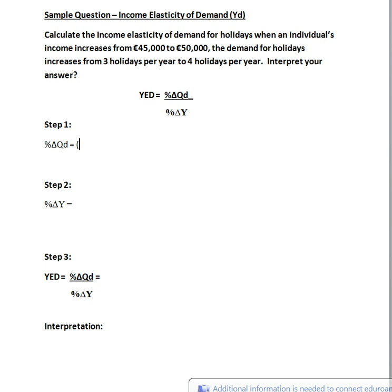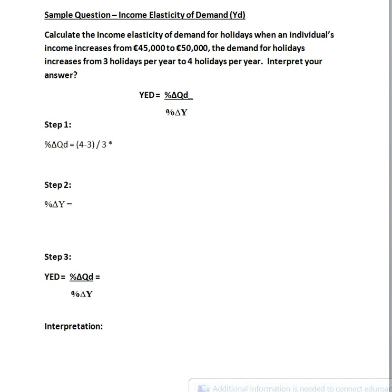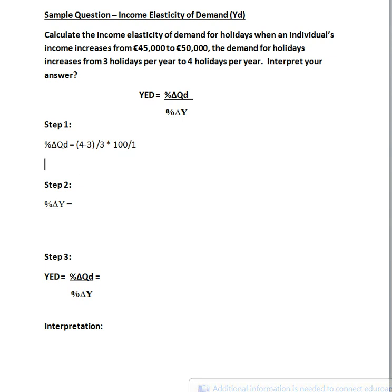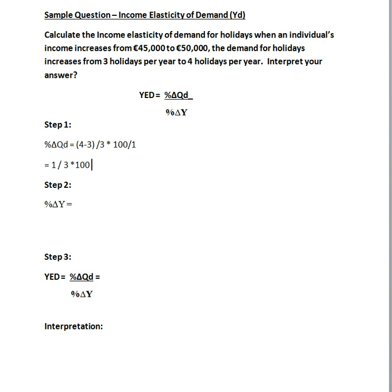Quantity demand is the new quantity minus the old quantity, divided by the old quantity, and then to get your percentage, multiply by 100. So the change is 1 divided by the original quantity, multiplied by 100 to get the percentage, and that works out to be 33.33%, correct to two decimal places.